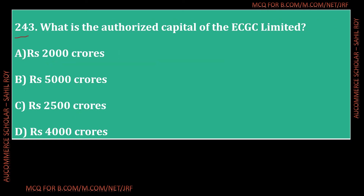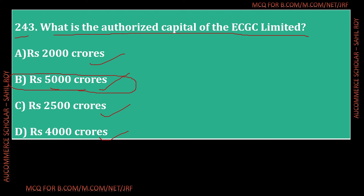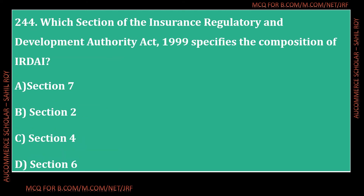Question number 243: What is the authorized capital of ECGC Limited? Options: 2,000 crore, 5,000 crore, 2,500 crore, or 4,000 crore. The correct answer is Option B - 5,000 crore. The authorized capital of ECGC Limited is 5,000 crore rupees.